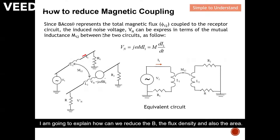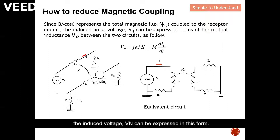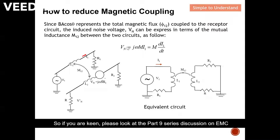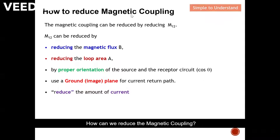Since B·A·cos(θ) represents the total magnetic flux coupled to the recipient circuit, the induced voltage VN can be expressed in this form. I explained this in my previous video on magnetic coupling — the noise that couples over becomes a voltage source and is represented by this equation. If you are keen, please look at the part 9 series discussion on EMC where I extensively explained this equation.